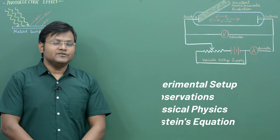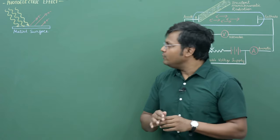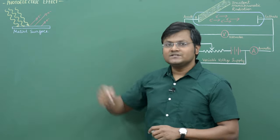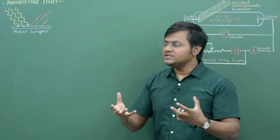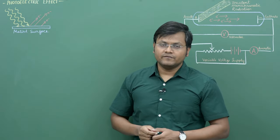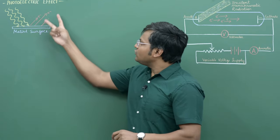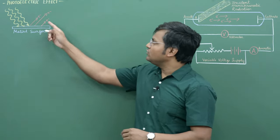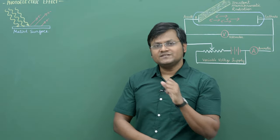So what is the photoelectric effect? It's a very simple phenomenon in which when incident radiation or light falls onto a metal surface, electrons are emitted. Whenever light of certain suitable frequency falls on a metal surface, electrons are ejected from the surface. This phenomenon is known as the photoelectric effect, and the electrons ejected from the metal surface due to the action of incident radiation are known as photoelectrons.